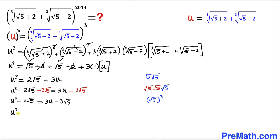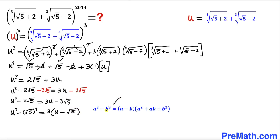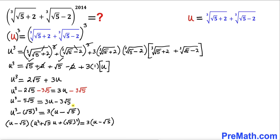So the equation becomes u³ − (√5)³ = 3(u − √5). Now let's apply the cubic identity a³ − b³ on the left hand side. This becomes (u − √5)(u² + √5·u + (√5)²) = 3(u − √5). The (√5)² simplifies to 5.